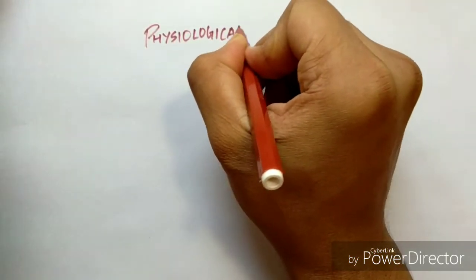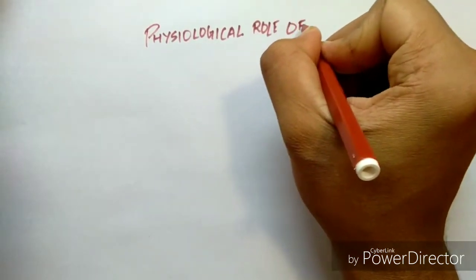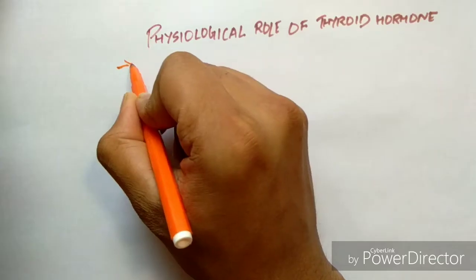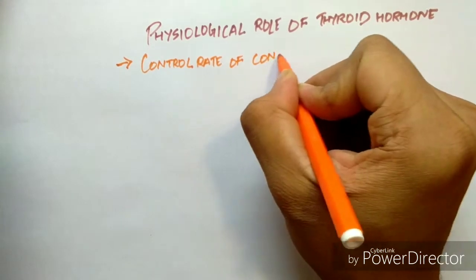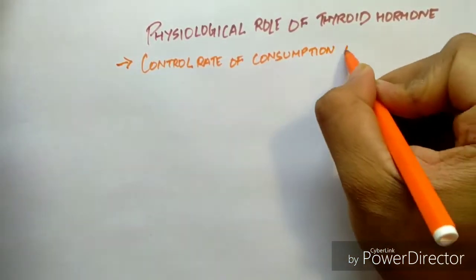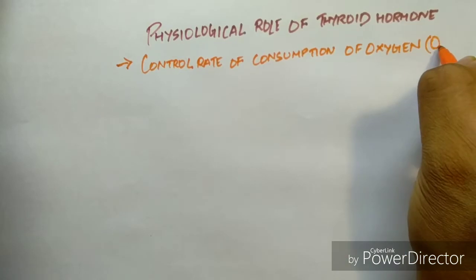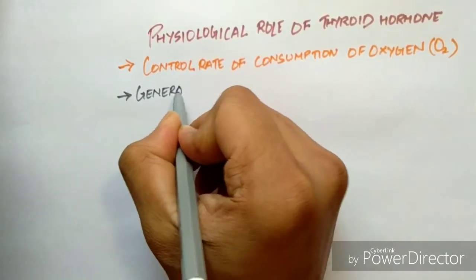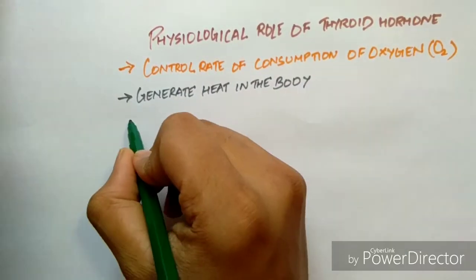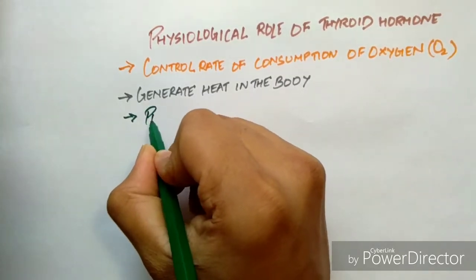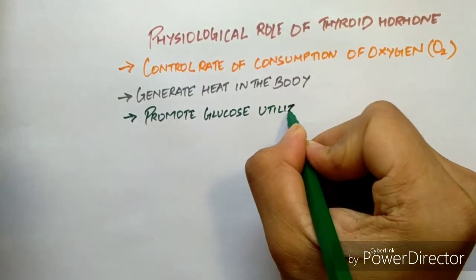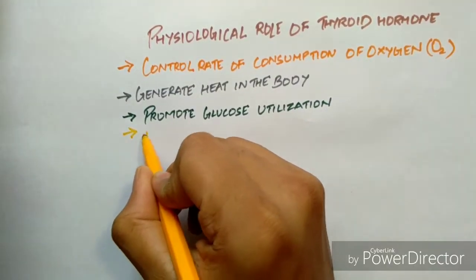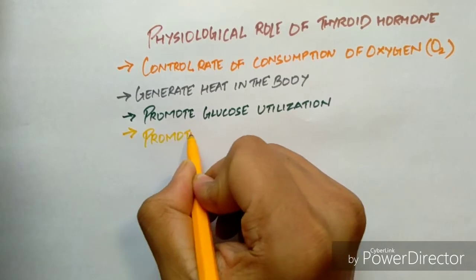We also need to know about the physiological role of these hormones. First, they control the rate of consumption of oxygen. Second, they generate heat in the body. Third, they promote glucose utilization, and finally they also promote lipolysis.